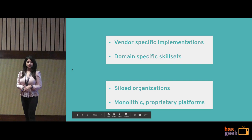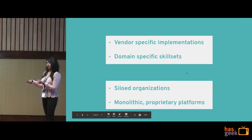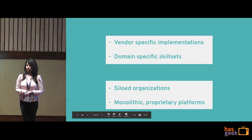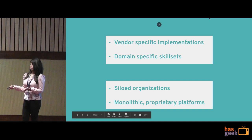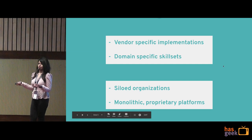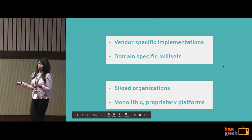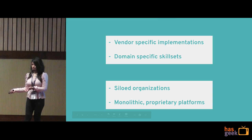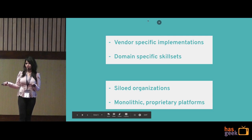Vendor-specific implementation is another issue. All networking vendors have implemented their technologies in ways very specific to themselves. Say I'm a network operator with a Cisco IOS router, Juniper switch, and F5 load balancer — the way each vendor implements their technologies is very different. So I have to be a Cisco expert, or an F5 expert, and there is no standard way to abstract all the different vendors to make a network operator's life easy. That's why siloed organizations have risen and proprietary platforms have developed.